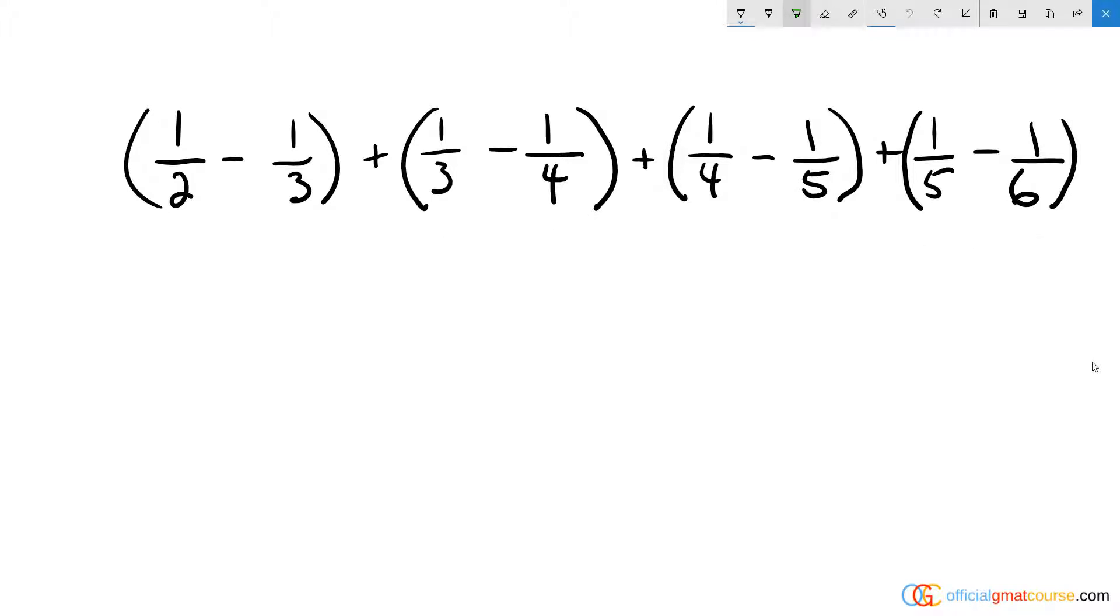We have one-half minus one-third and then we end up having the addition of a third minus one-fourth. And in addition and subtraction, the order of operations does not matter. So as long as we're only dealing with addition and subtraction, we can basically pretend like none of these brackets really exist.